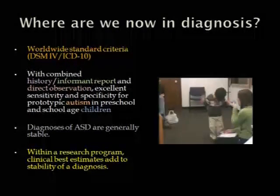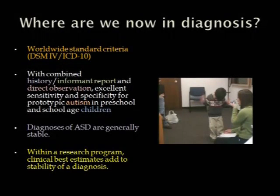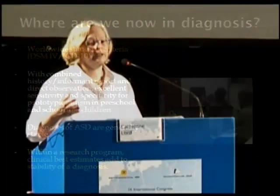Right now I think we're actually at a good point in diagnosis, and I hope that DSM-5 doesn't cause us to be at a less good point. We currently have worldwide standard criteria for diagnosis, because DSM-4 is very similar to ICD-10 — this was really due to the diplomatic efforts of Fred Volkmar and Mike Rudder. This time, we have DSM-5 coming along and then ICD-11, so who knows what's going to happen. But it's been very useful that we all have very similar criteria and are not broken up by North America versus Europe versus Asia.